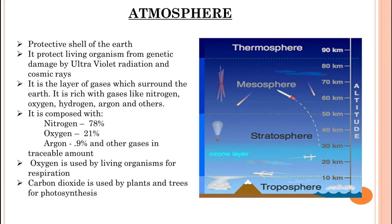Oxygen is used by plants and trees for photosynthesis. Plants and trees use carbon dioxide for preparing their food. The atmosphere has 4 layers: troposphere, stratosphere, mesosphere and thermosphere.